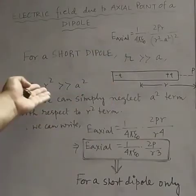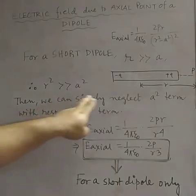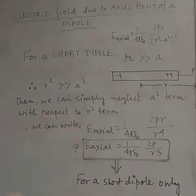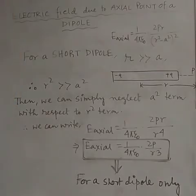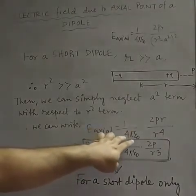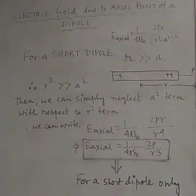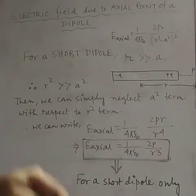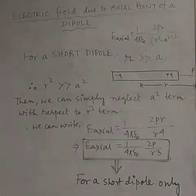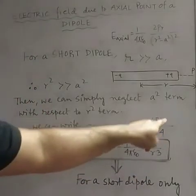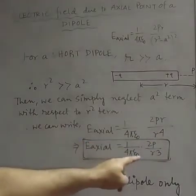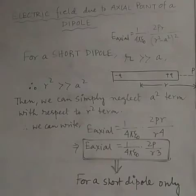Since r >> 2a, r² >> a², so we can neglect the a² term. The expression simplifies: E_axial = (1/4πε₀) × (2pr / r⁴) = (1/4πε₀) × (2p / r³). That is the final expression for the electric field due to the axial point of a short dipole.